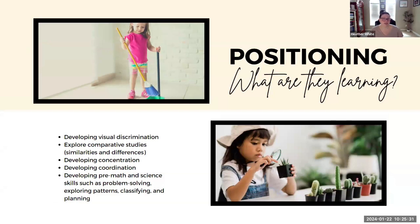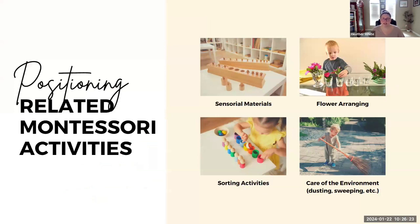What is the child learning when they arrange or line things up? They're developing visual discrimination skills — maybe lining things up from smallest to largest or darkest to lightest. They're developing concentration and coordination, pre-math and science skills like problem solving, pattern exploration, and classification — sorting things by color, size, or shape — as well as planning skills and comparative studies as they investigate the similarities and differences of objects.